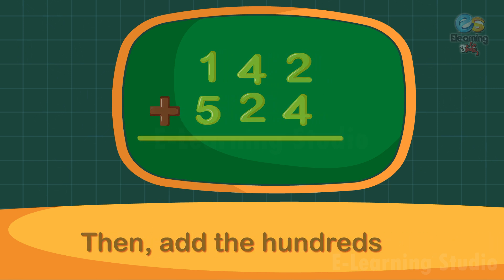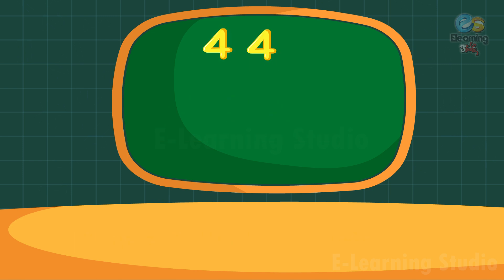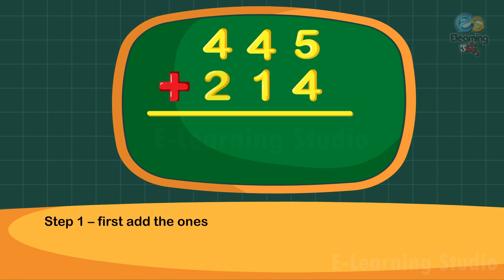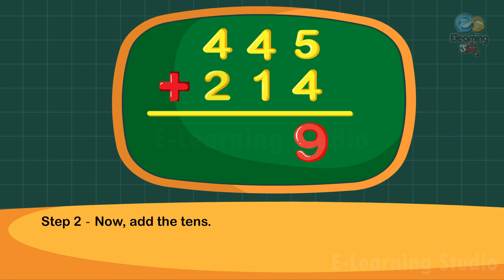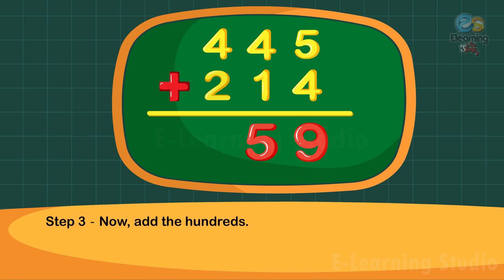Now add 445 and 214. Step 1: First add the ones. 5 plus 4 is equal to 9. 9 under ones column. Step 2: Now add the tens. 4 plus 1 is equal to 5. 5 under tens column. Step 3: Now add the hundreds. 4 plus 2 is equal to 6.